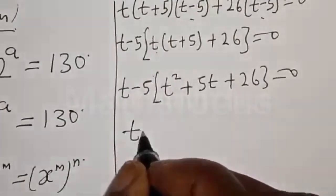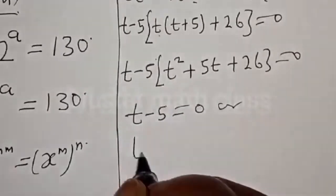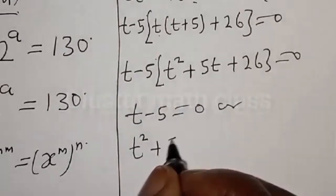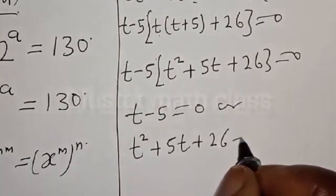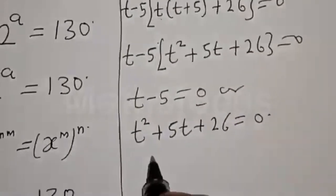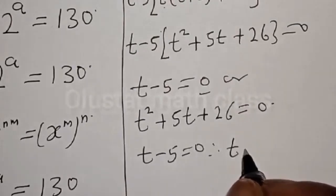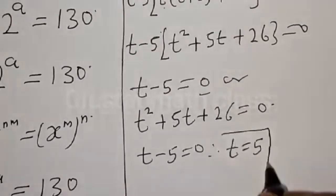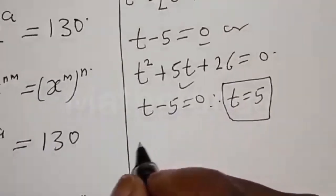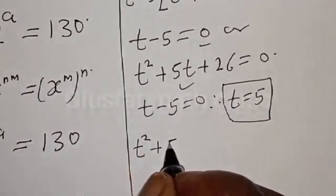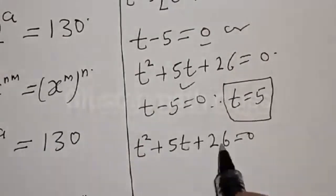So t minus 5 equals 0, or t squared plus 5t plus 26 equals 0. From t minus 5 equals 0, therefore t equals 5. That is one value of t. The other factor, t squared plus 5t plus 26 equals 0, is a quadratic equation.